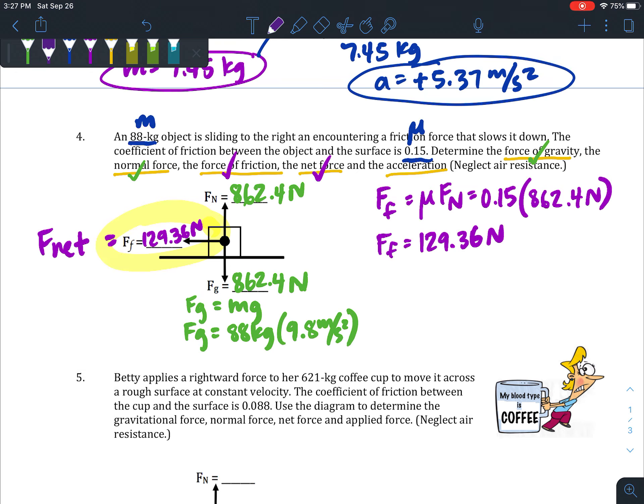My last question is to solve for the acceleration. I'm going to use Newton's second law for that because that's the only one that has a in it. I just said the net force was equal to the friction, so that was 129.36 newtons. They gave me the mass at the beginning (88 kilograms), and I'm going to solve for a, so I divide by 88 and get an answer of negative 1.47 meters per second squared. That's negative because friction is slowing it down, and technically this friction force should be negative because I drew it to the left.